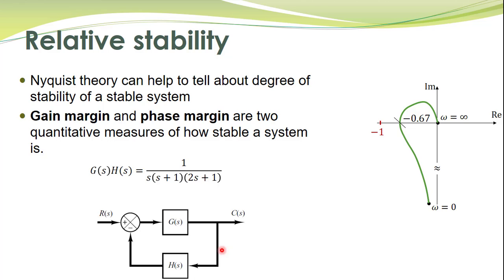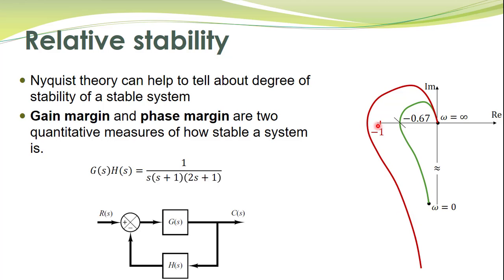If we add some gain to this transfer function, the polar plot will be magnified — the shape of the curve remains the same, but it is scaled up. With some additional gain, the new polar plot shows that the system becomes unstable because the critical point is now encircled.